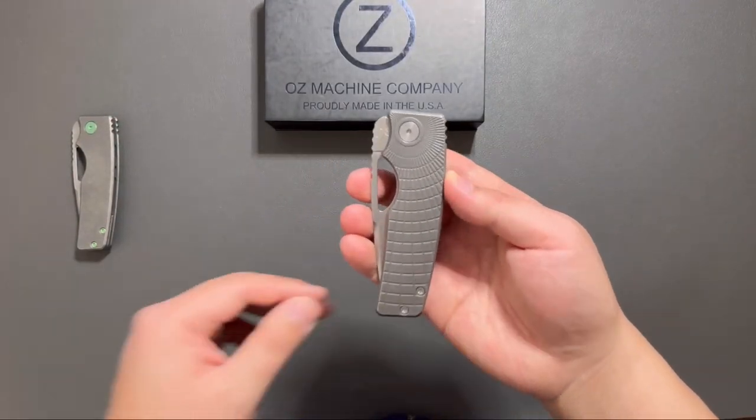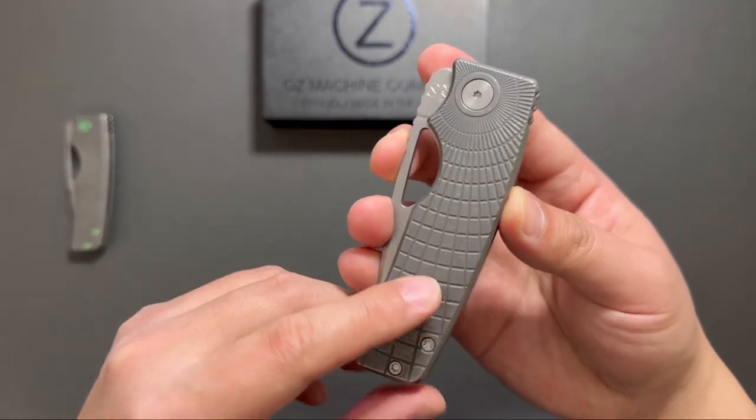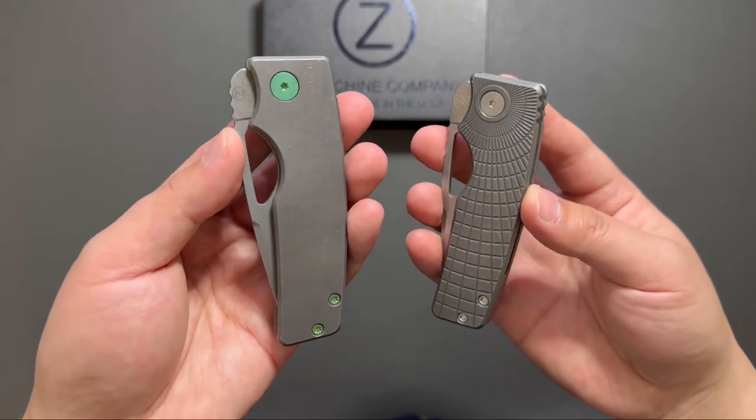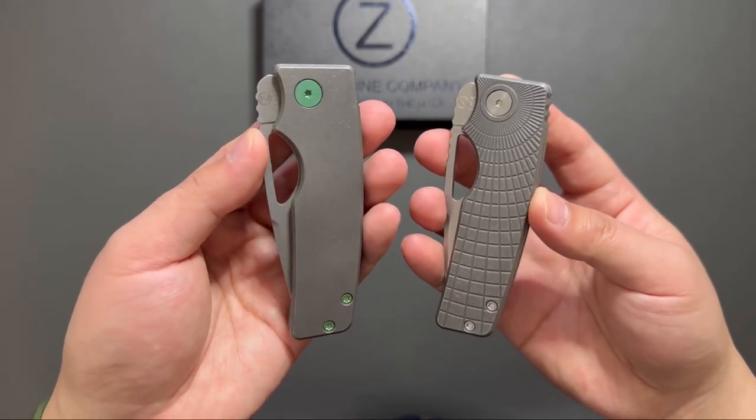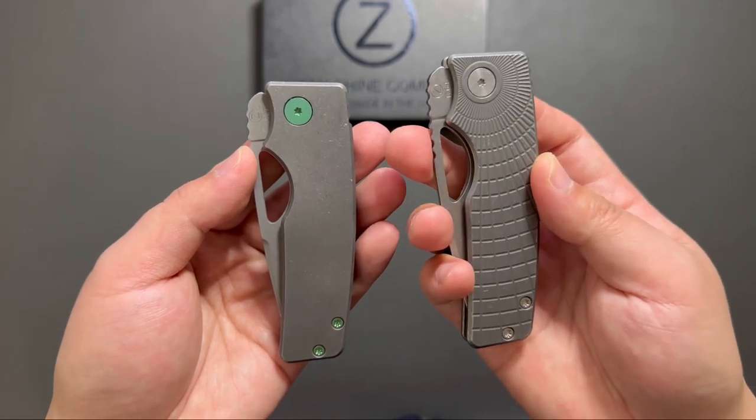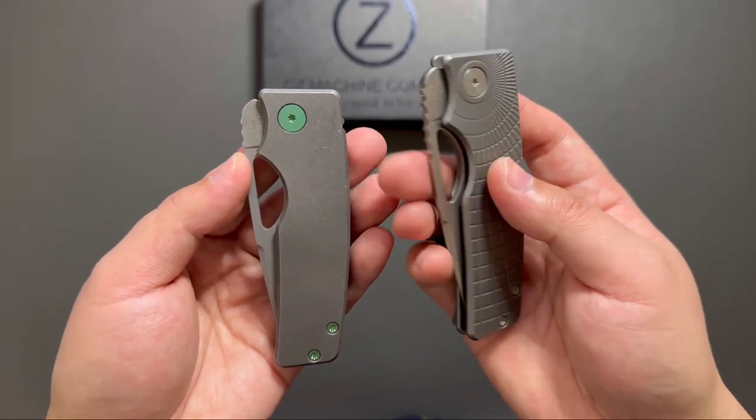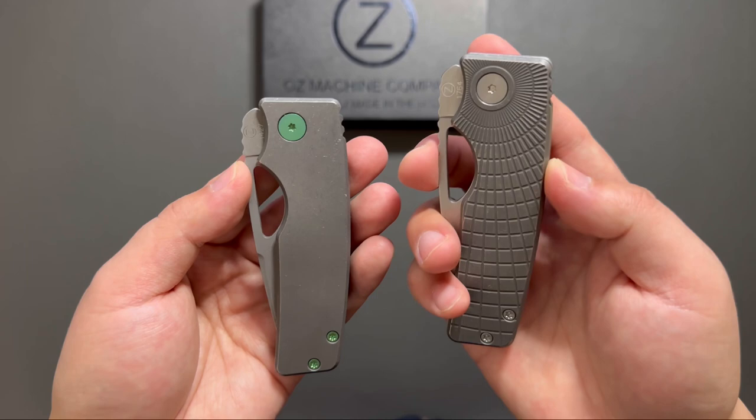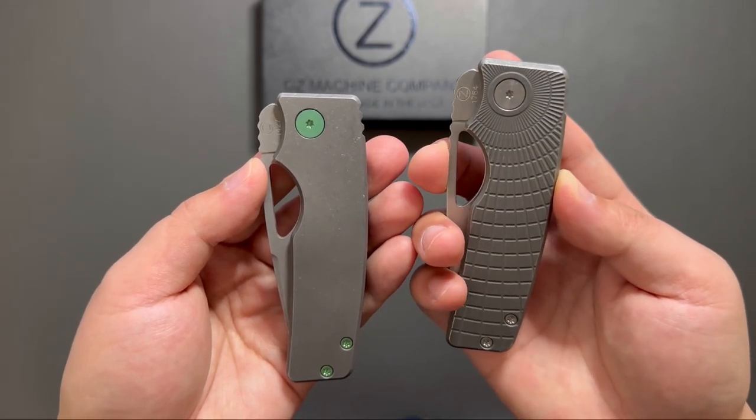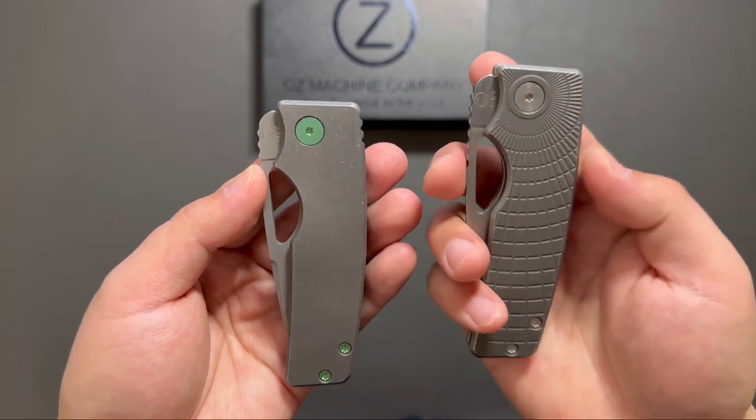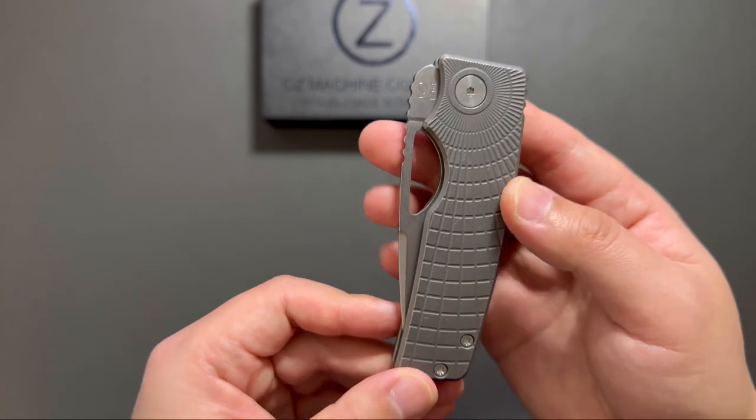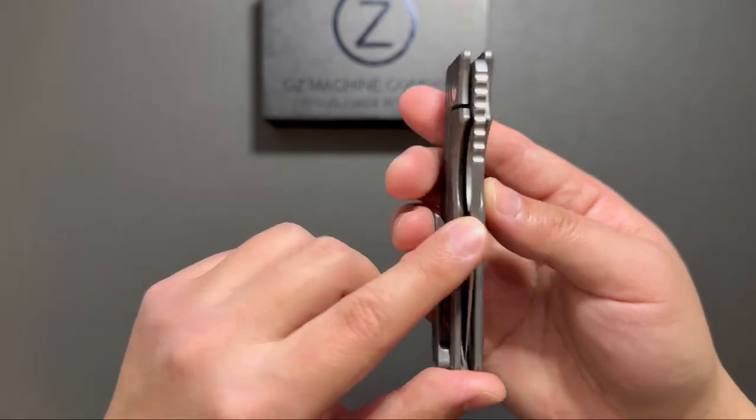You can see the mailing compared to this PG stonewashed dark stonewashed. This one is also dark stonewashed scales but in this radio flag pattern. The blade is stonewashed.